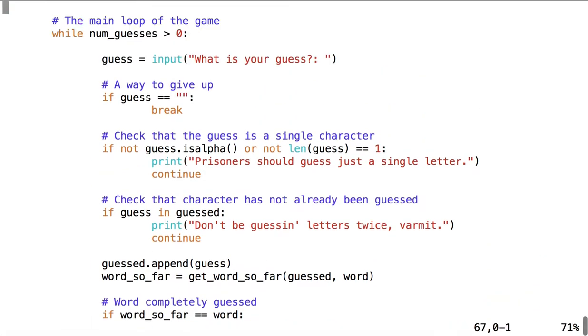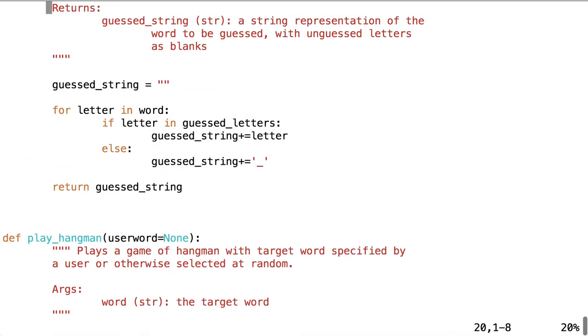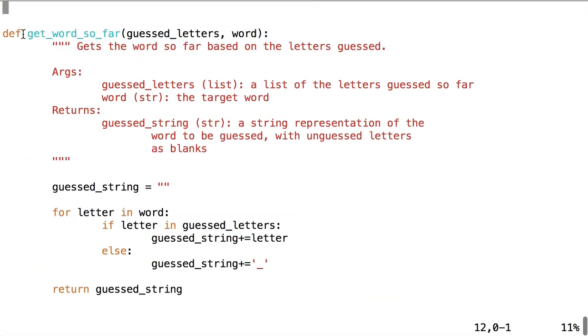So let's take a look at getWordsSoFar. GetWordsSoFar is a much shorter method. It takes the list of guessed letters and the target word as its arguments, and it will return a string called guessedString, which is a string representation of the word to be guessed with the letters that have not yet been guessed as blanks.